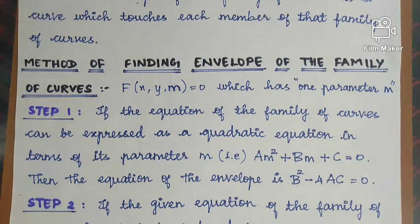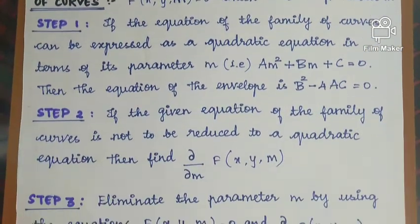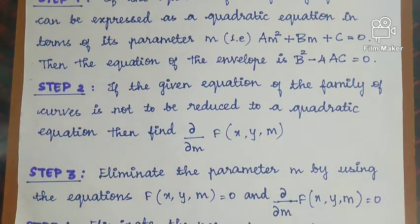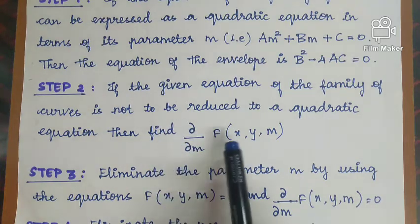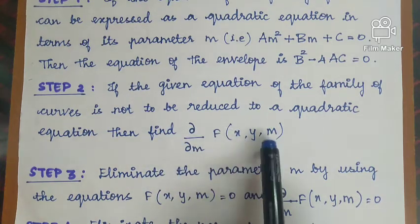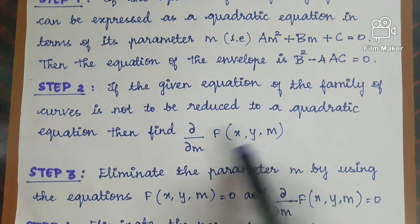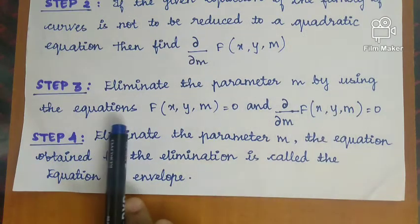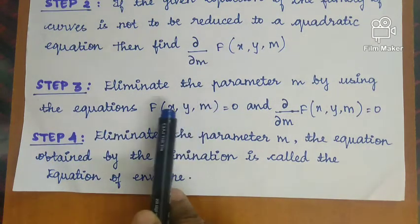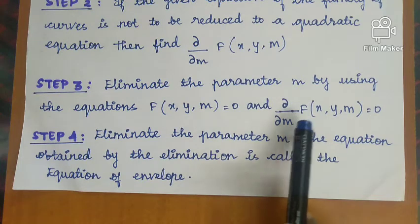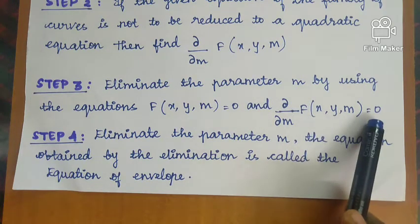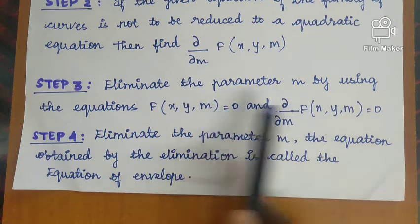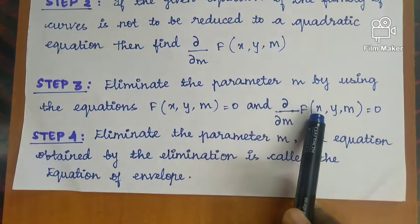If the equation of the family of curves cannot be reduced to a quadratic equation, then to find the envelope, we take the partial derivative with respect to m: ∂/∂m of f(x, y, m) = 0, where m is the parameter. Then eliminate the parameter m using f(x, y, m) = 0 and ∂/∂m of f(x, y, m) = 0.